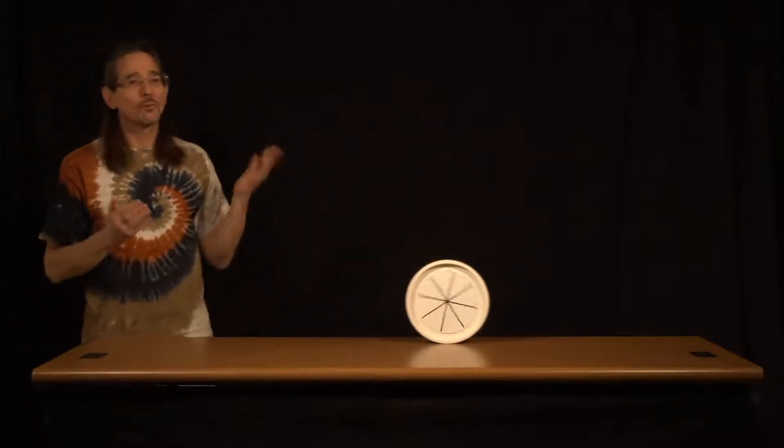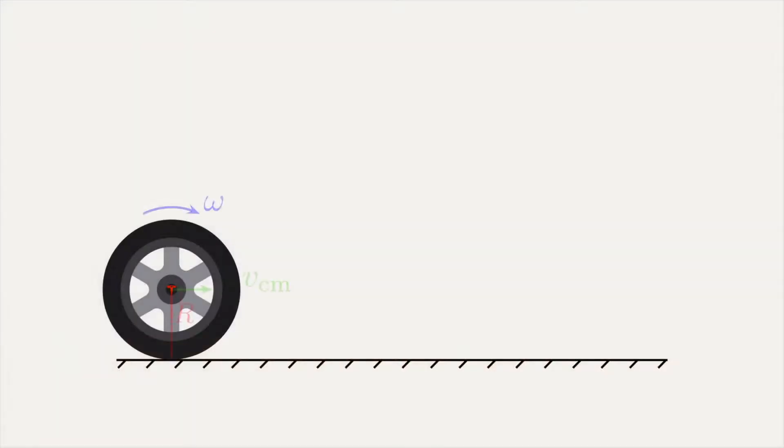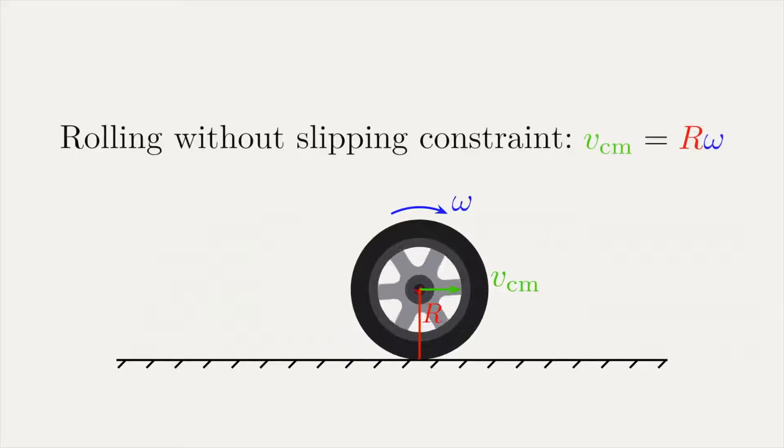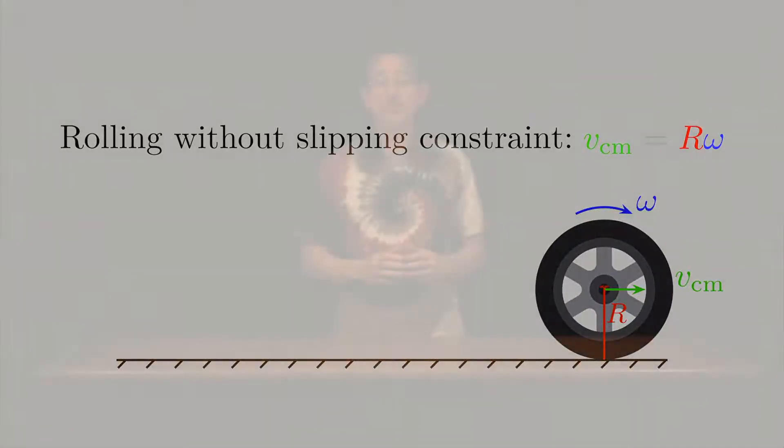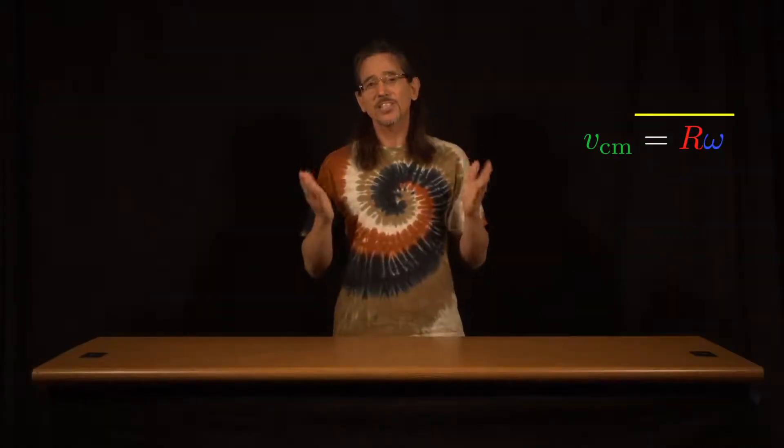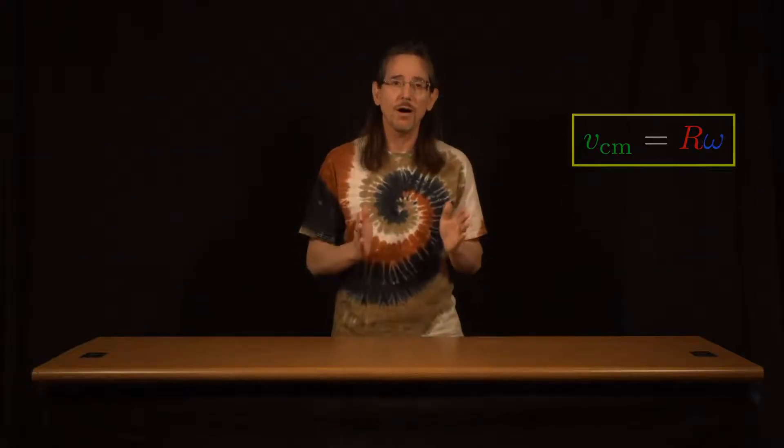Even though we know it won't roll forever, it doesn't appear to slow down at all. Lastly, before getting into the details, recall that an object that rolls without slipping is governed by a mathematical constraint between the translational and rotational speeds. If this constraint equation is at all puzzling to you, I recommend you press pause and watch the video titled A Detailed Look at a Rolling Wheel, before continuing.